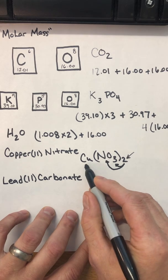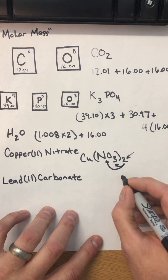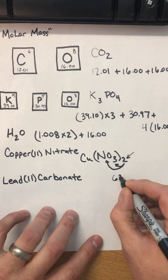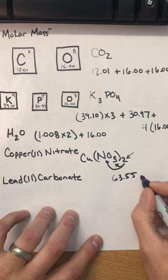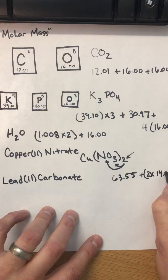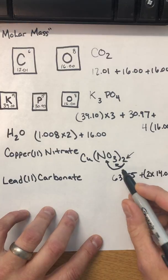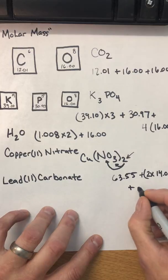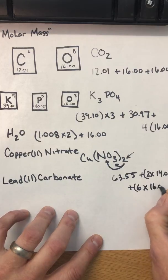So here we've got a single copper to account for. So that's 63.55. And we've got two nitrogens. Each are 14.01. And then we've also got two times the three is six oxygens, right?